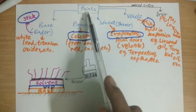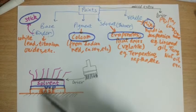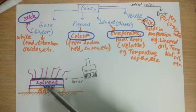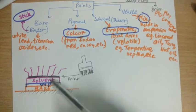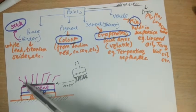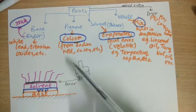So let's recall what we have seen. Base attaches to the surface, pigment provides color, solvent evaporates so that this paint is set.